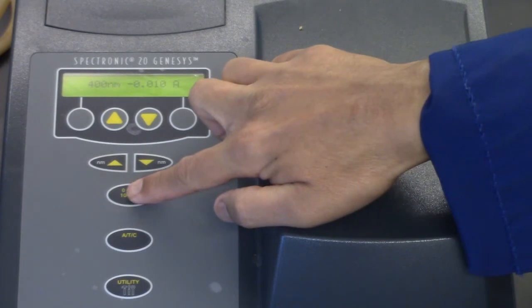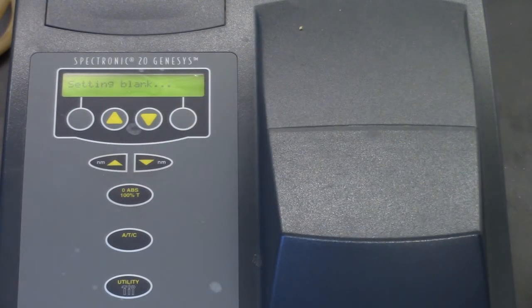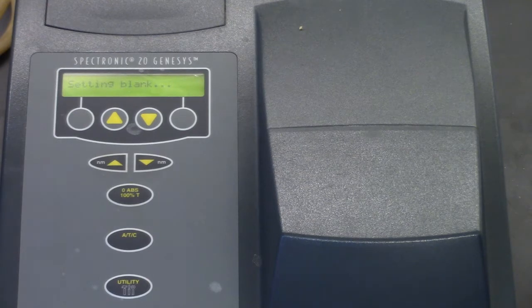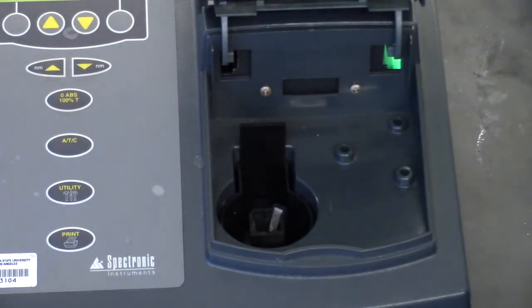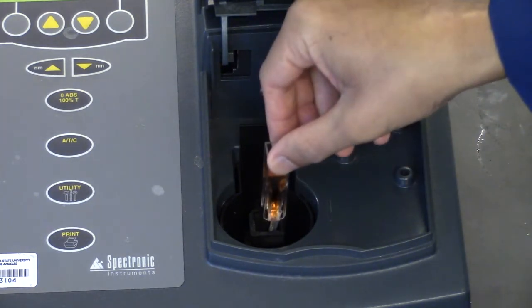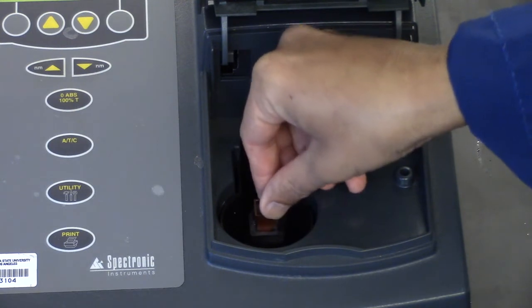Select the starting wavelength and zero the spectrometer. After calibrating the spectrometer at the starting wavelength, insert the cuvette with A3 and close cover gently and measure absorbance.